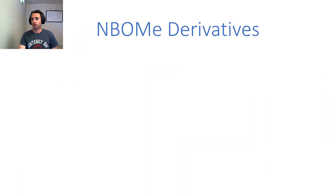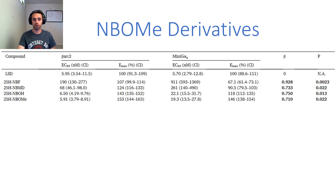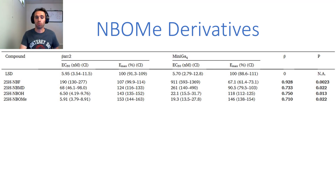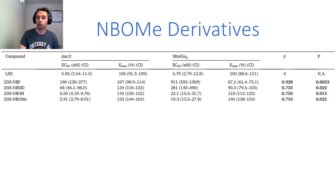Now let's look at the results of the NBOM derivatives, with LSD as the reference compound. Going from 25H-NBF to 25H-NBMD in the beta-arrestin potency assay, we increase potency — the EC50 goes from 190 to 68. From 25H-NBMD to 25H-NBOH, replacing with an alcohol group, we increase potency by about 10 times. The 25H-NBOME with a methoxy group also increases potency a little bit, with the alcohol and methoxy substitutions being particularly potent. The efficacy does increase but not by as large a factor as potency, going from 107 to 124 to 143 to 153.